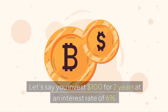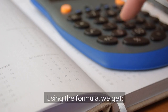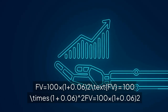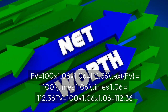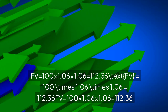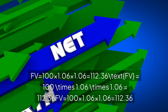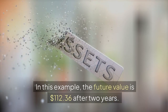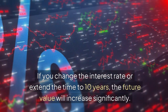Let's say you invest $100 for two years at an interest rate of 6%. Using the formula, we get: FV = 100 × (1 + 0.06)^2 = 100 × 1.06 × 1.06. The future value is $112.36 after two years. If you change the interest rate or extend the time to 10 years, the future value will increase significantly.